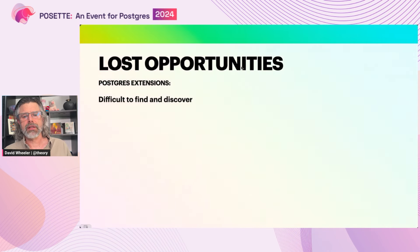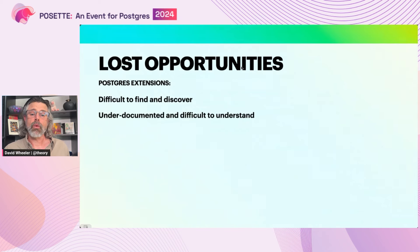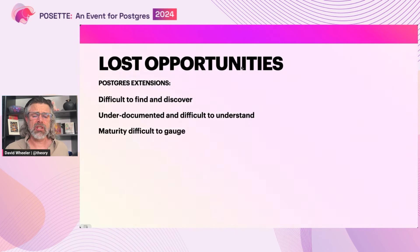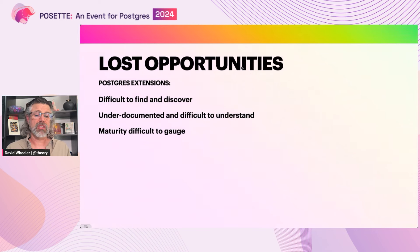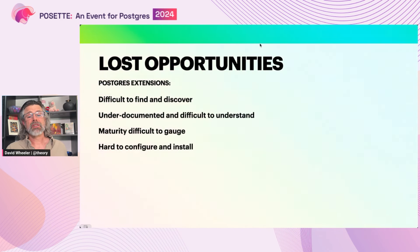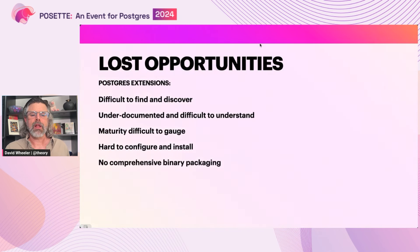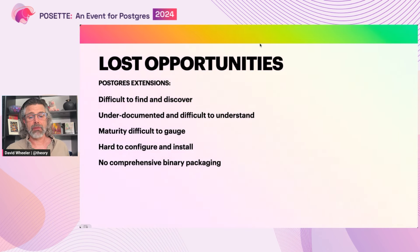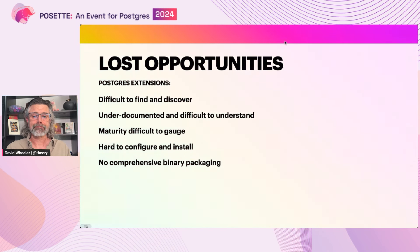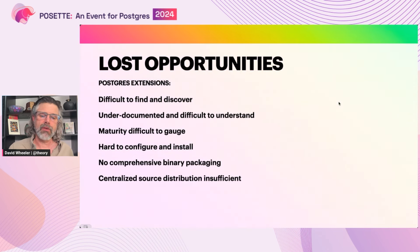Postgres extensions remain quite difficult to find and discover, since they're scattered to the internet winds. Most that one can find, including on PGXN, are under-documented and difficult to understand. And when you do find them, it can be tricky to gauge the maturity, reliability, and stability of an extension, especially if there isn't much documentation. Furthermore, they're difficult to configure and install — most users just want to add them to their dev or production clusters and not have to install a bunch of tooling like compilers and developer packages on those servers. A lot of this has to do with there being no comprehensive binary packaging system covering a wide variety of platforms, architectures, and Postgres versions. It's catch-as-catch-can between the community Apt and YUM repositories and tools like Homebrew. On Windows, it's pretty much omitted altogether.